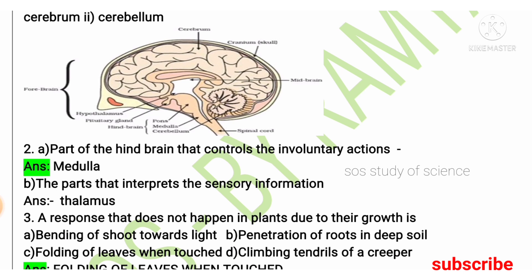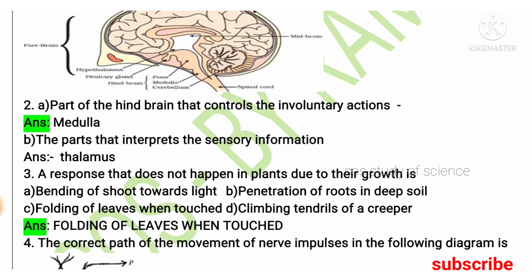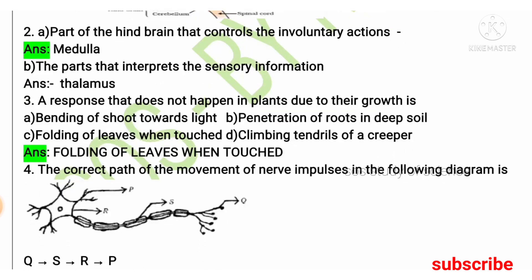Moving to the third question, which is a multiple choice question. A response that does not happen in plants due to their growth is? The options are: bending of root towards light, penetration of root in deep soil, folding of leaves when touched, and climbing tendrils of a creeper. The right answer is folding of leaves when touched, as this does not happen due to growth.